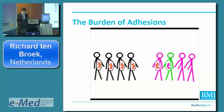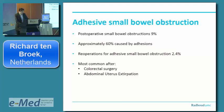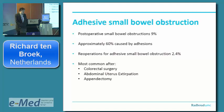Adhesive small bowel obstruction is just one of the many complications you can get from adhesions. About 9% of patients who have had abdominal surgery will develop small bowel obstruction somewhere in their lives, usually between 5 and 10 years post-operatively, and in 60% that is caused by adhesions. Re-operations for adhesive SBO affect 2.4% of all patients undergoing abdominal surgery — not only general surgery patients, but also urological and gynecological patients. The most common surgeries causing ASBO are colorectal surgery and abdominal hysterectomy, now more often done laparoscopically. Also noteworthy: appendectomy has a low incidence of SBO, but we do lots of them, so you will see quite a few at your emergency department.